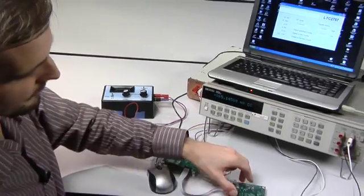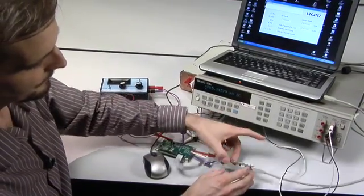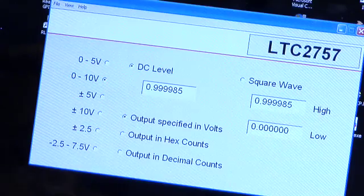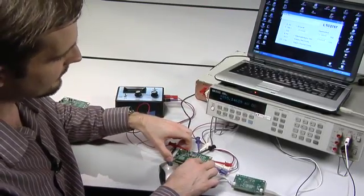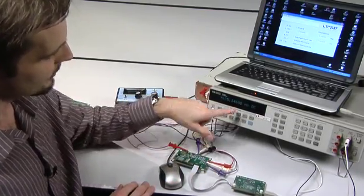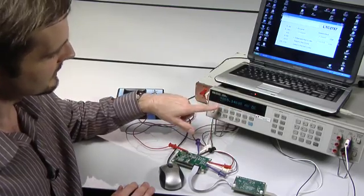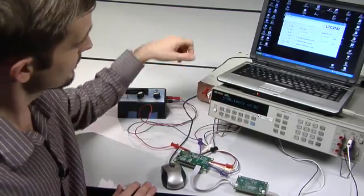So here's the whole setup. We've got our computer interface board. We've got a PC running our quick evaluation software connected up to the DAC itself. So I've got the power removed from the DAC right now because I'd like to show you what happens when you first turn the circuit on.